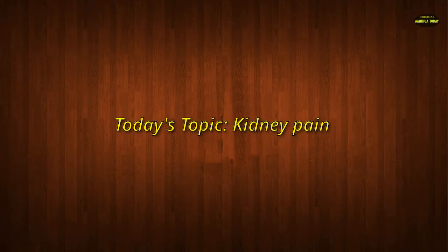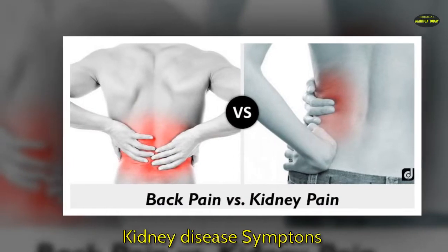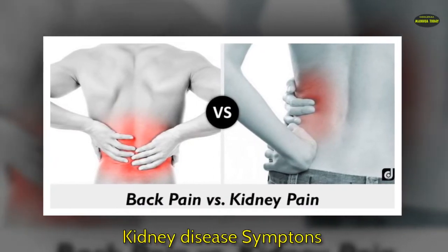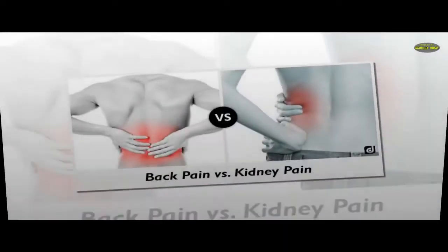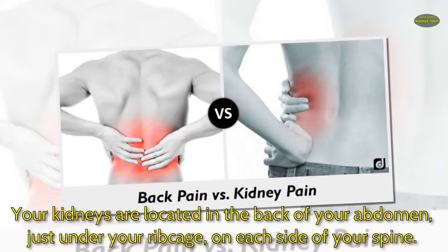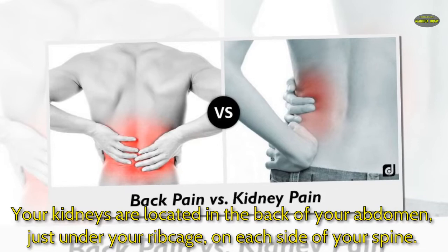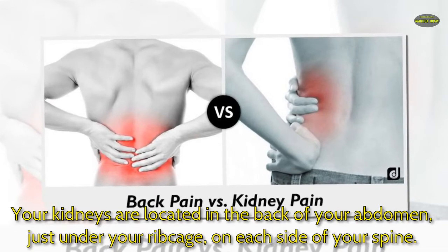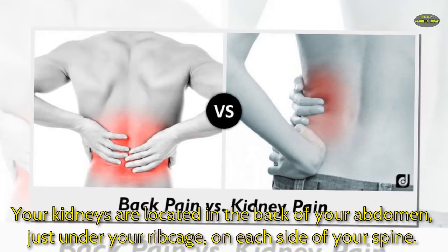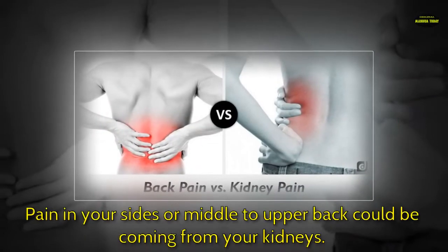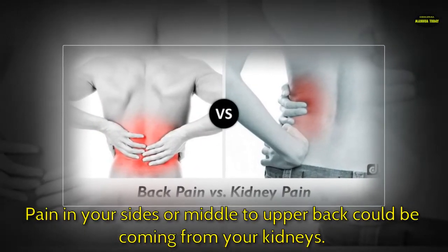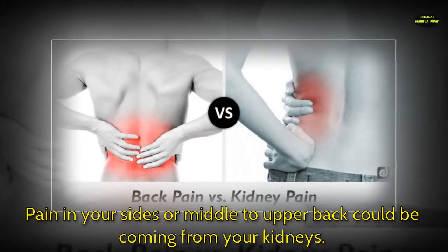Today's topic: kidney pain and kidney disease symptoms. Your kidneys are located in the back of your abdomen, just under your ribcage on each side of your spine. Pain in your sides or middle to upper back could be coming from your kidneys.